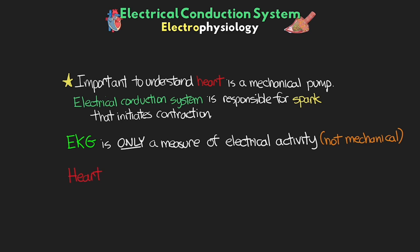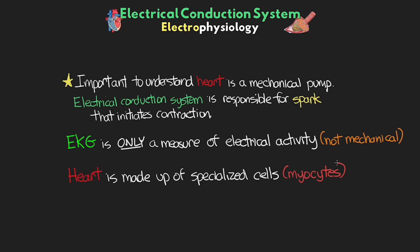Our heart is made up of specialized cells or myocytes. The main ones we want to focus on here are the ones for pacemaking, signal transmission, and contraction. The purpose of these cells and the system is to generate the electrical activity that's going to lead to contraction of cardiac muscle cells, as well as to ensure that this activation signal reaches all parts of the heart in an appropriate amount of time.